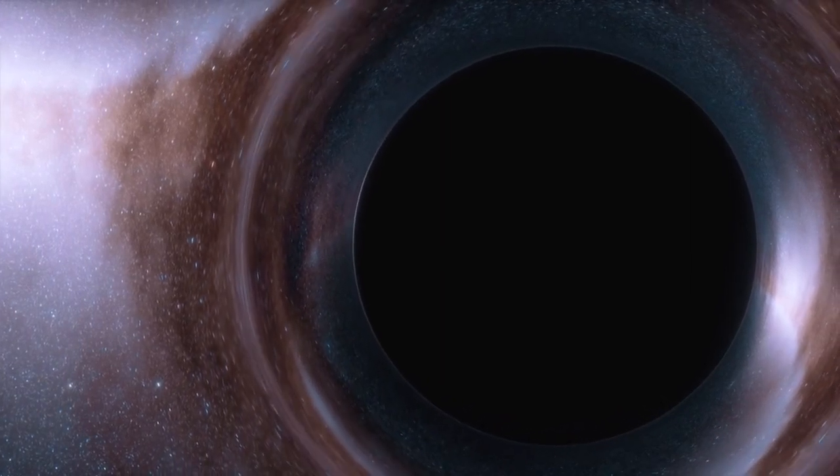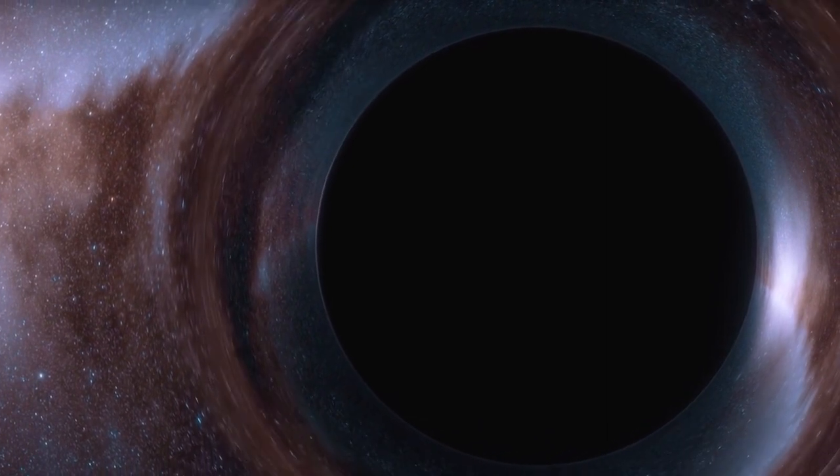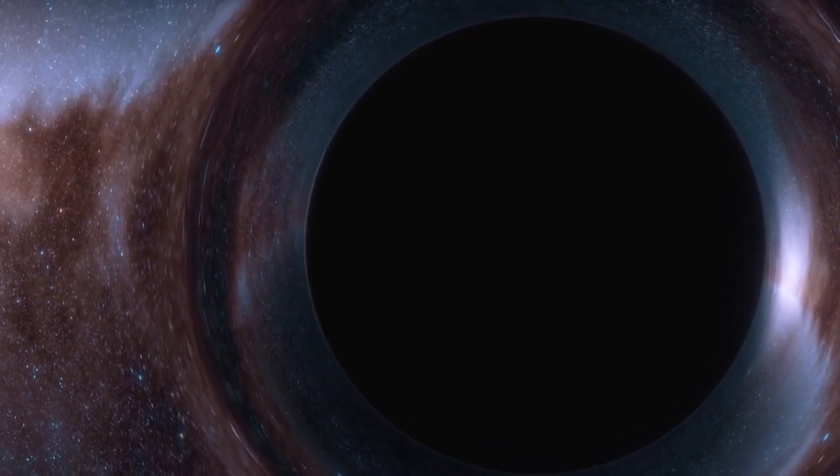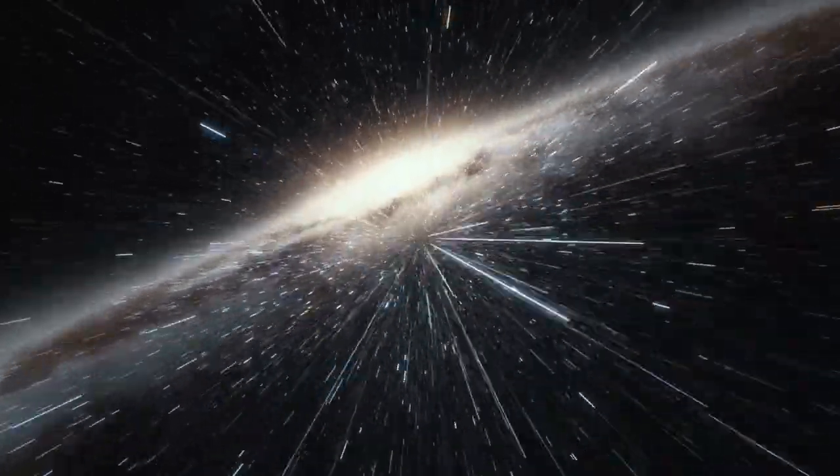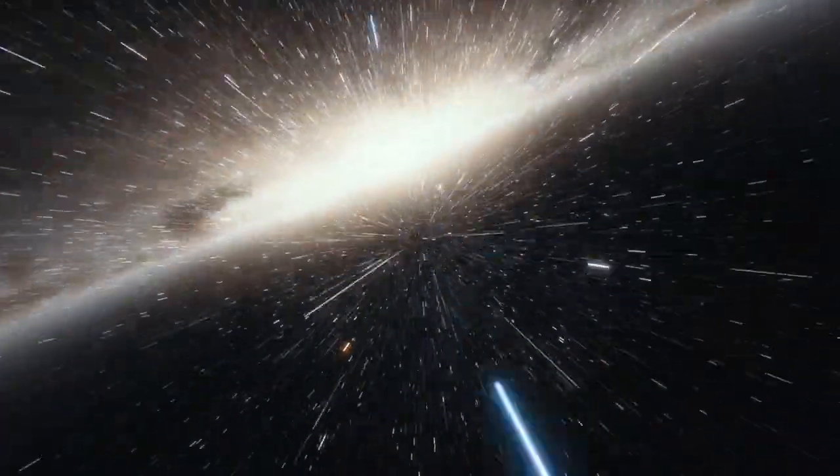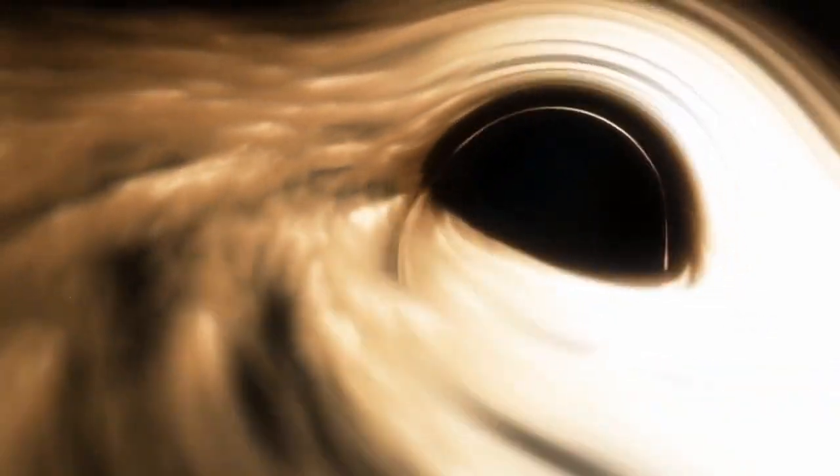For centuries, black holes have captivated scientists and everyday people alike, as their incredible properties and immense gravitational pull defy our understanding of the universe. Among the most intriguing aspects of black holes is the accretion disk that forms around them, a ring of superheated plasma heated to millions of degrees, emitting a brilliant glow that can be seen billions of light years away.